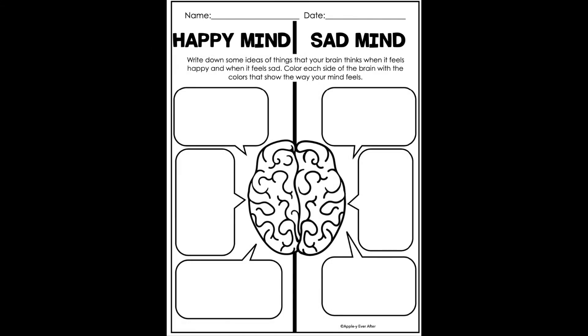So here on this sheet we have happy mind and sad mind. You're going to write down some ideas of things that your brain thinks when it feels happy and when it feels sad. You're going to color each side of the brain with the colors that show the way your mind feels. If you look at the left half of the sheet, that would be the left side of your brain — that's going to be our happy mind. We have three boxes to fill in based on how we feel or maybe what makes us happy, and then you're going to color that left side of the brain your happy colors. What are colors that make you super happy or make you feel happy?